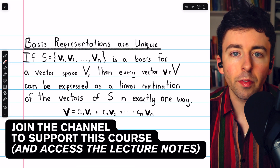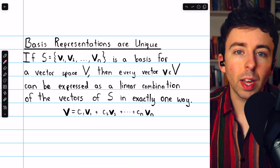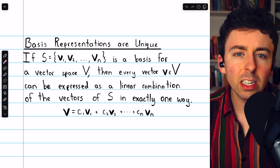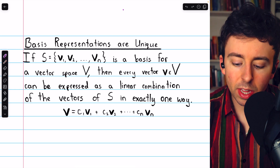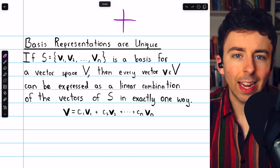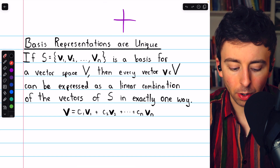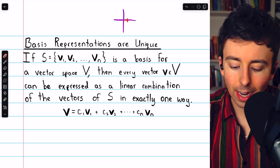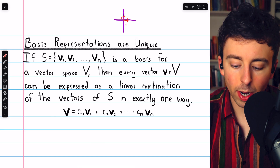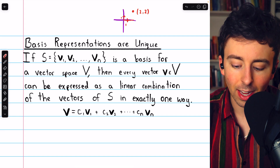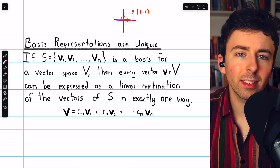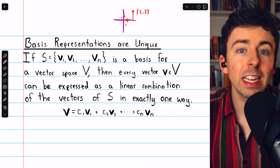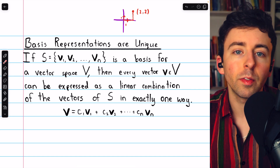We previously introduced the idea of the basis of a vector space. We saw how each vector space has many different possible bases, and each vector in the space can be expressed as a linear combination of the vectors in any basis we choose. When we think about R², the xy plane, we generally think of this space as being built out of a unit vector along the x-axis and a unit vector along the y-axis. Any point in this space can be described with a coordinate pair. But what would happen to this coordinate pair if we changed the basis of the space? That's the question we're going to deal with today by introducing the idea of the coordinates of a vector relative to an arbitrary basis.